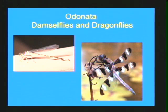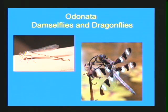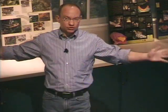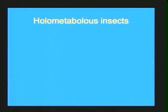Adult Odonata have huge eyes and are visual predators — very fierce even in the case of the delicate-looking damselfly. They eat large numbers of other insects, catching them on the wing. Damselflies hold their wings straight over their abdomens but unlike mayflies they don't hold them up like a sail. Dragonflies hold their wings straight out on the sides of their body, and are generally a bit more robust than damselflies. That concludes the hemimetabolous insects.